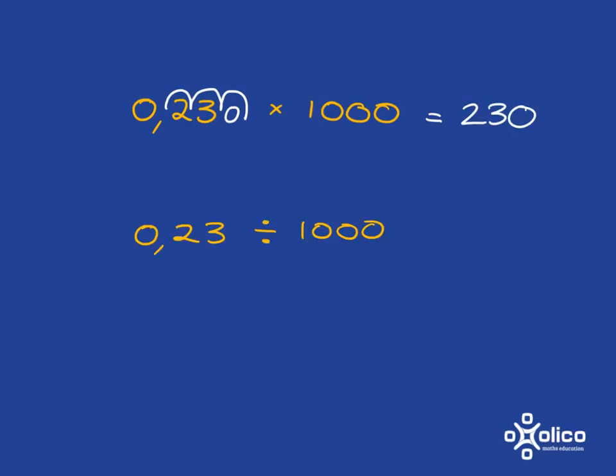If we want to divide by 1000, this is just going to require us to make the place value smaller. And so we're just going to move the comma in the other direction. And again, 1, 2, 3 lots of 10. So we're going to move 1, 2, 3 lots over, put the comma there, and we'll fill in the zeros. And so we get our answer is 0.00023.